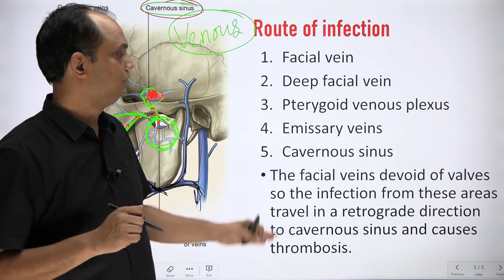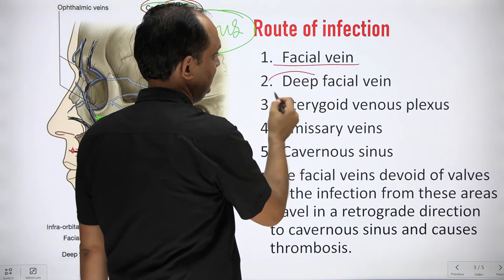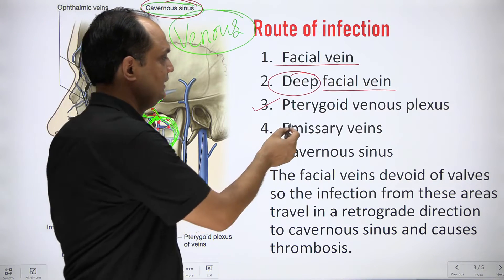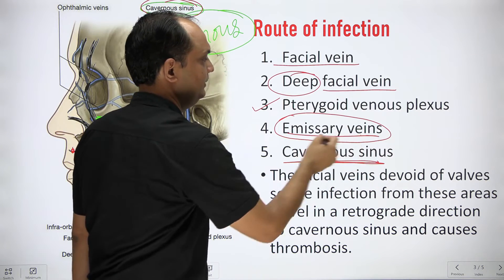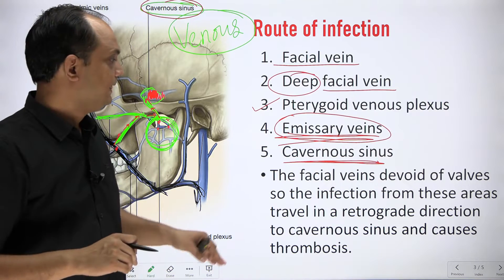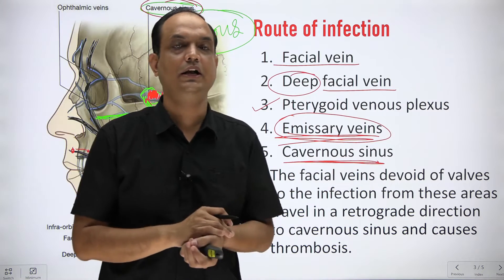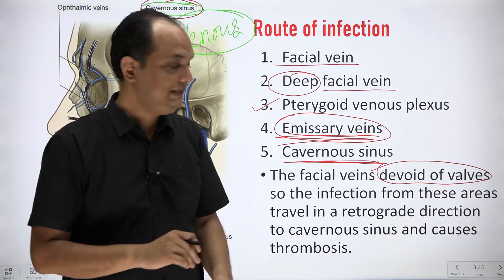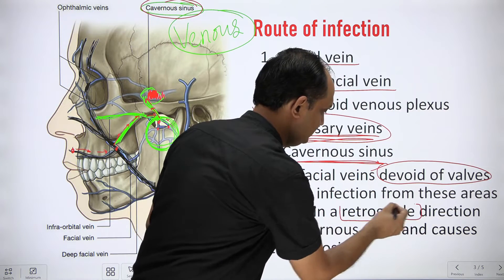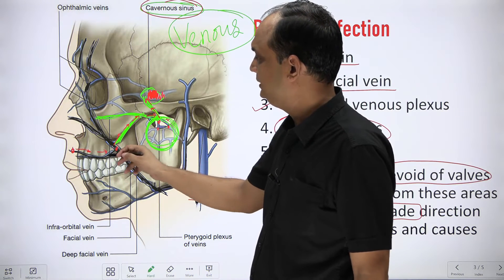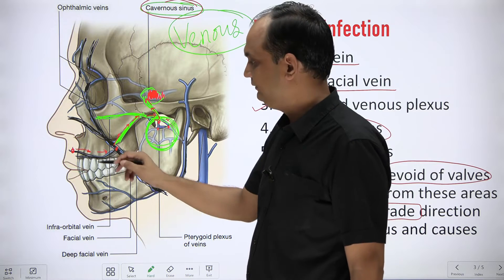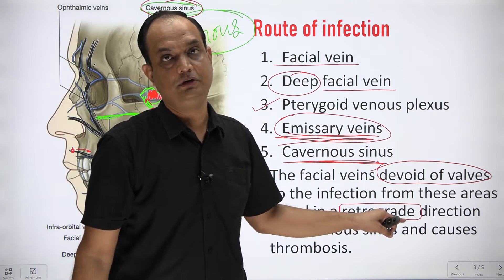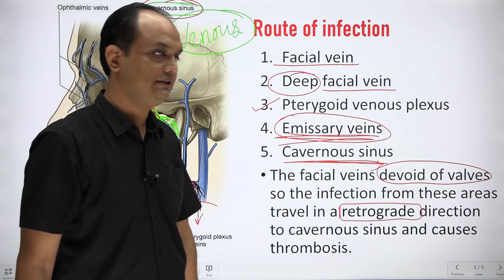To summarize the route: facial vein → deep facial vein (deep connection) → pterygoid venous plexus → emissary veins → cavernous sinus. This retrograde flow of infection is possible because the facial vein is devoid of valves. Normally blood flows downward into the internal jugular vein, but because there are no valves, the infection can travel in the retrograde direction and ultimately reach the cavernous sinus, causing thrombosis.